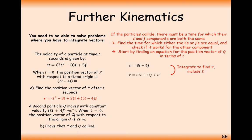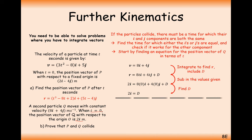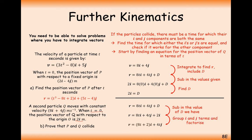Integrating Q's velocity gives 8ti plus 4tj plus D. Plugging in t equals 0 with position vector 2i gives D equals 2i. Writing out Q's position vector with D equals 2i and grouping i and j components gives Q's full position vector. We now have position vectors for both P and Q.